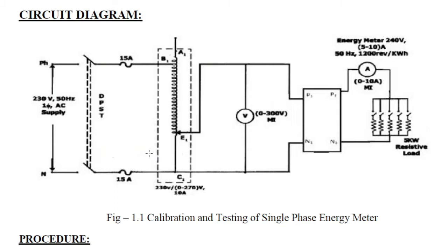There is a disc in the induction-type energy meter which rotates based on the amount of load — if the load is more, the disc rotates faster. As we increase the load, the speed of the induction disc increases. We will find the time taken for 10 revolutions for each load, from which we can calculate the meter constant — number of revolutions per kilowatt hour — and compare with theoretical data to find the percentage error.